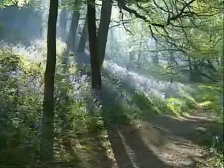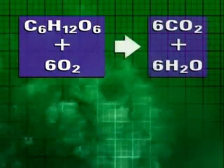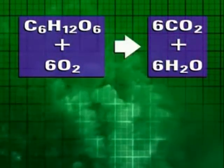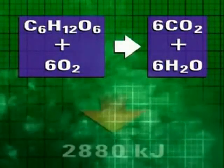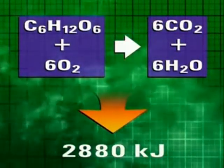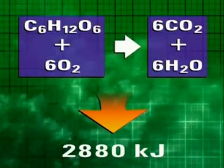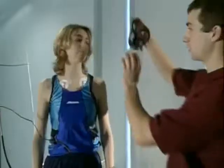Most plants and animals respire aerobically, which means they use oxygen. This combines with glucose to form carbon dioxide and water. At the same time, energy is released. It's this energy which allows plants and animals to move and grow.